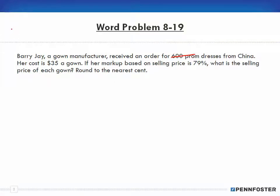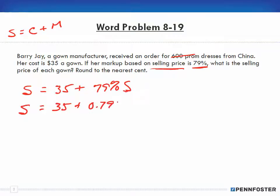And our formula, selling price is equal to cost plus the markup. So the selling price is equal to the cost which is $35 plus the markup. And the markup is 79% based on the selling price. So that's 79% times S, times the selling price. And then from here it's just a matter of doing the math. Selling price is 35 plus 0.79 times S.